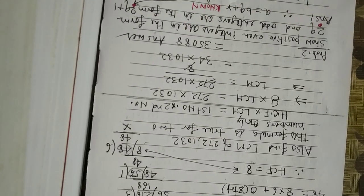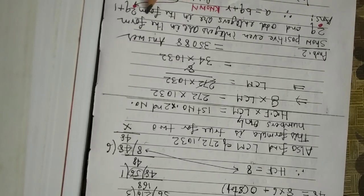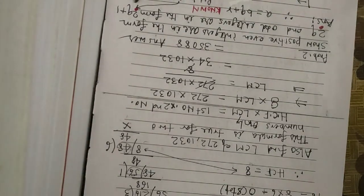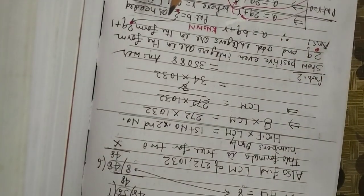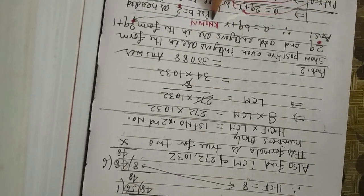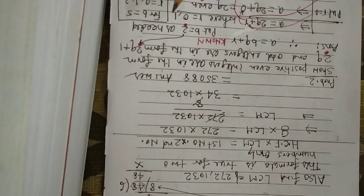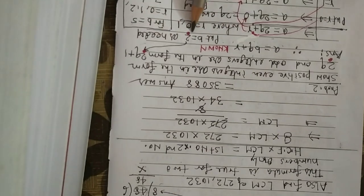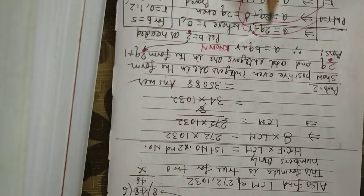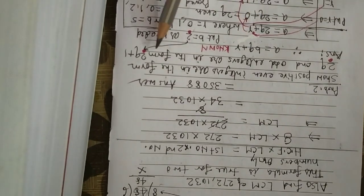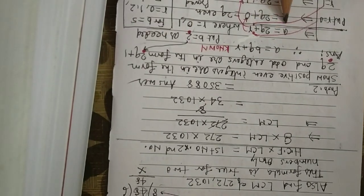Problem 2: Show that positive even integers are always in the form 2q, and odd integers are always in the form 2q + 1. Since our requirement involves 2, use the known formula A = BQ + R and put B = 2. We get A = 2q + r. When B is 2, the remainders can only be 0 or 1. Now put r = 0: A = 2q + 0 = 2q, which is even. Put r = 1: A = 2q + 1, which is odd, because even plus odd is odd.